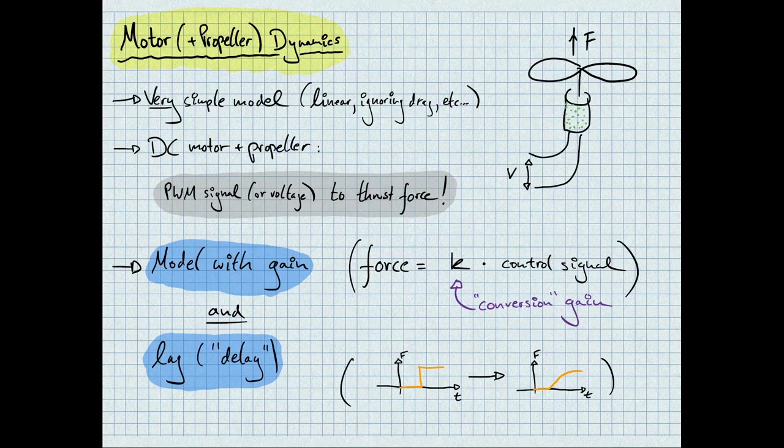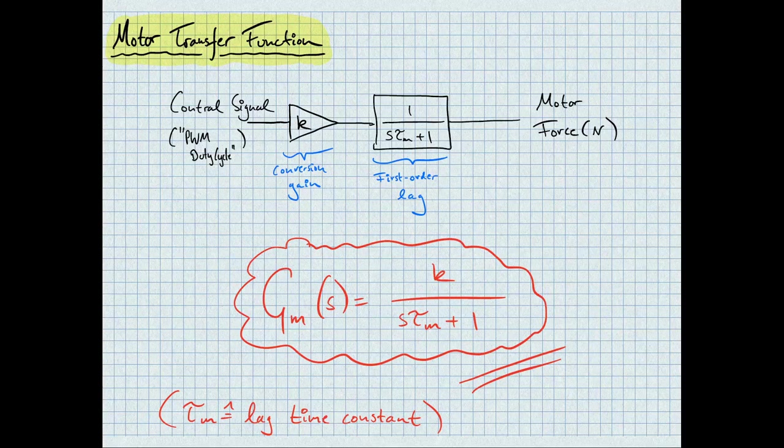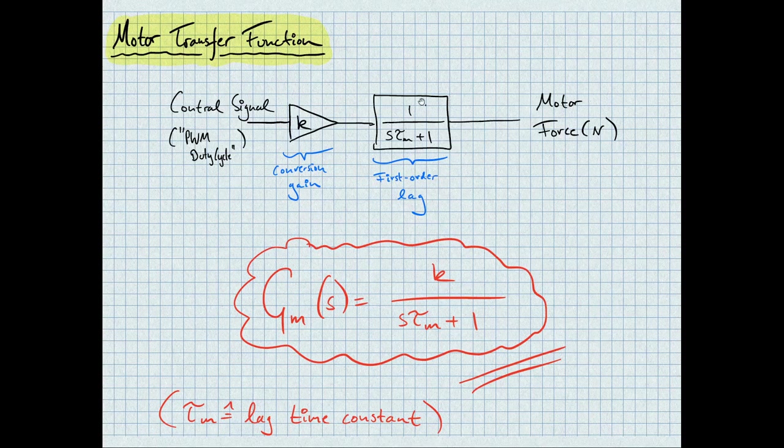However, we also know that the motor's speed, and therefore its thrust, cannot change instantaneously. We can model this effect via a lag or a delay term. This way, a step input results in an exponentially increasing output. The motor transfer function is therefore simply the cascade of the conversion gain and the first order lag. The first order lag can also be seen as a low-pass filter, where high-frequency components are attenuated. Tau m is the lag time constant. If tau m is zero, the lag disappears, whereas if tau m is large, there is a larger delay introduced into the system.